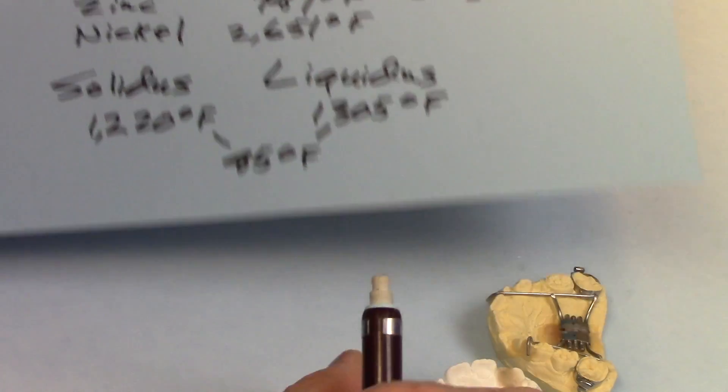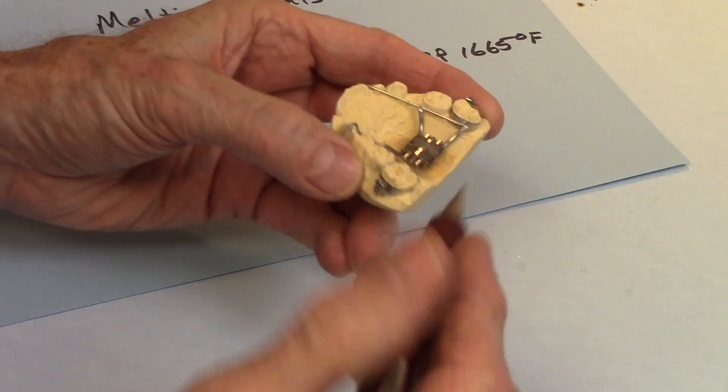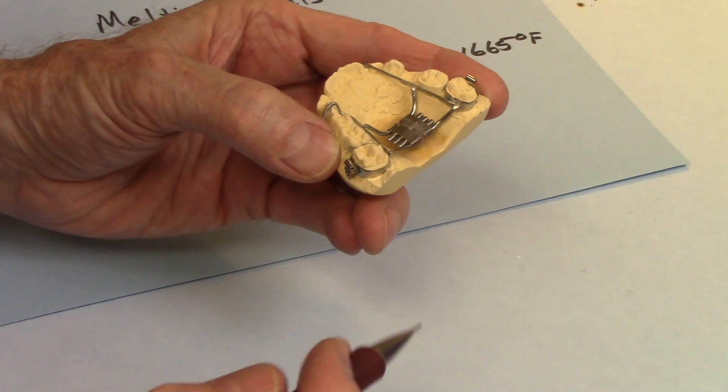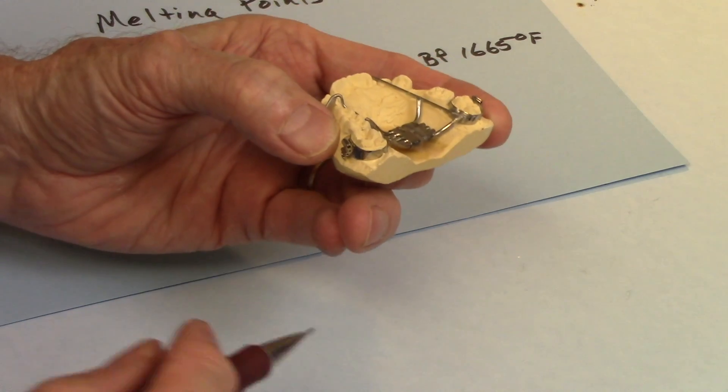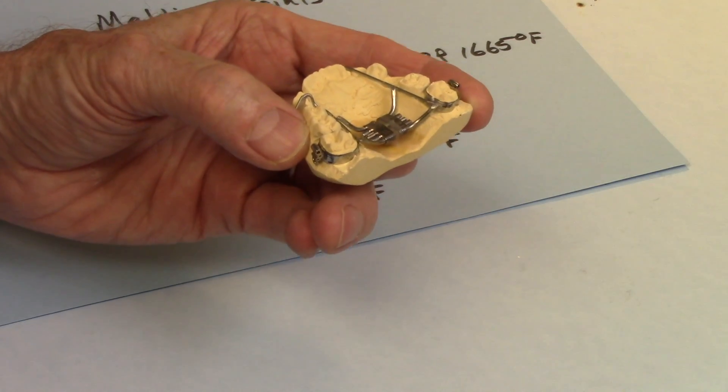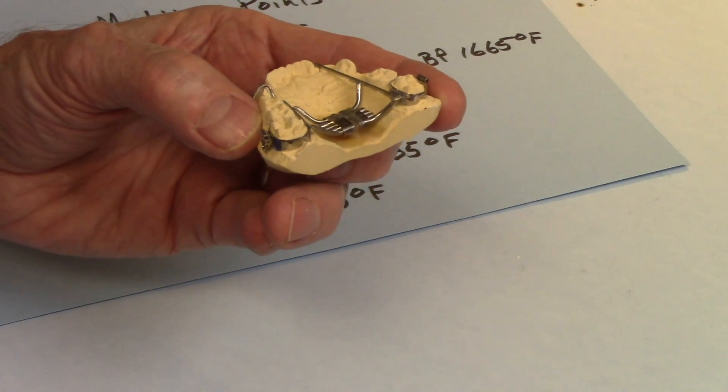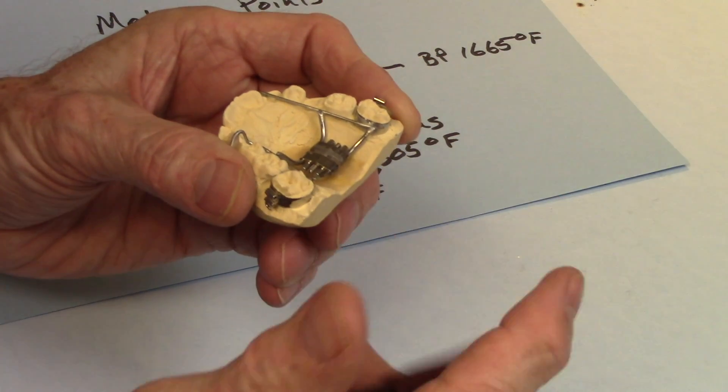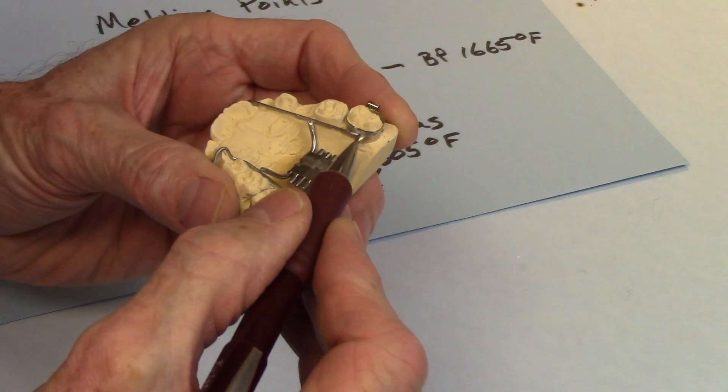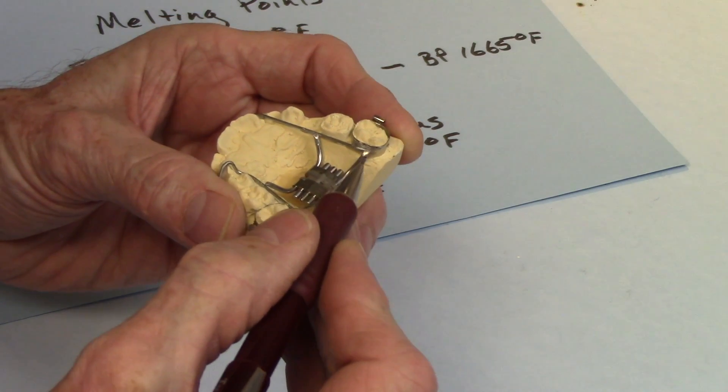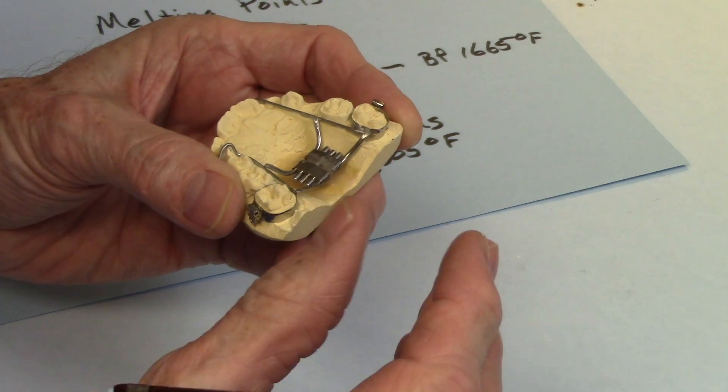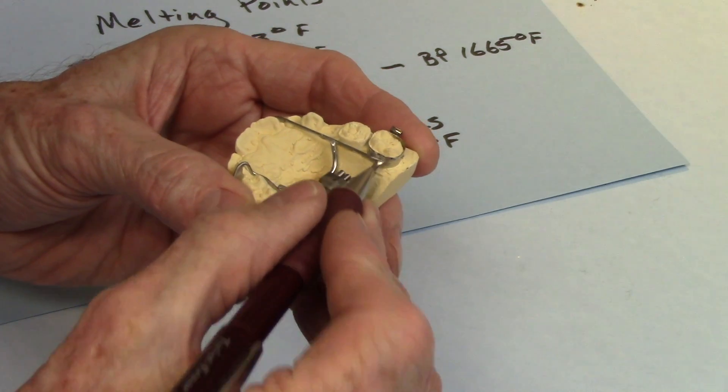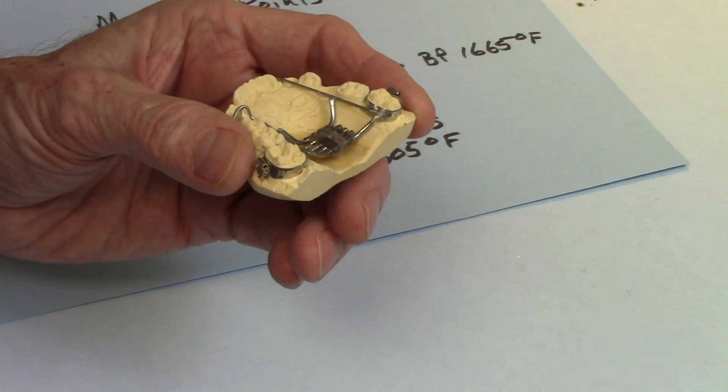Once the gelatinous or slushy solder covers this, I let it cool. I let it bench cool—I don't drop it in water. If you do that, it shocks the metal and causes it to shrink rapidly. The bonds between those grains will rapidly shrink, weakening those bonds and making it brittle. So we don't do that.